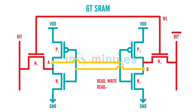Let's assume that A was initially written with logic 0 and B was initially written with logic 1. This makes sense: if A is 0, this 0 goes through this path to the input of inverter 2, P2 turns on, and it will pull node B to logic 1 or VDD. So we have assumed A is at 0 and B is at 1, and we want to read this 0 at A.